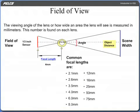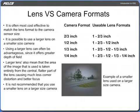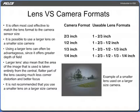The viewing angle of the lens, or how wide an area the lens will see, is measured in millimeters, and this number is found on each lens. It is often most cost effective to match the lens format to the camera's sensor size. It is possible to use a larger lens on a smaller size camera, since the image only needs to be at least as large as the sensor.